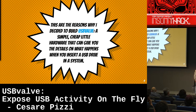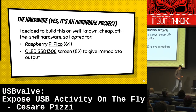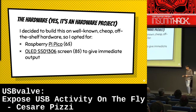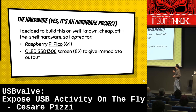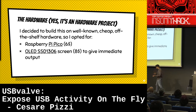USB Valve is a very simple way to have visibility on what a system is doing when you insert a USB drive. It's actually a hardware project — it's a keychain, as we'll see. It's built on something really easy to find, cheap, and well known. I decided to build this on two things: the Raspberry Pi Pico, which is about a $6 board, and an OLED screen, which is about $8 or maybe less. So for around $10 you can build it and have your own checker for this kind of thing.